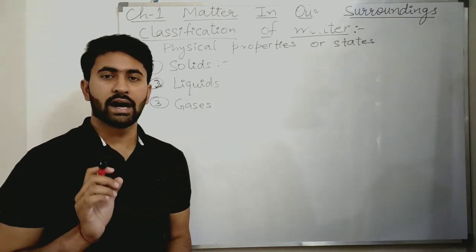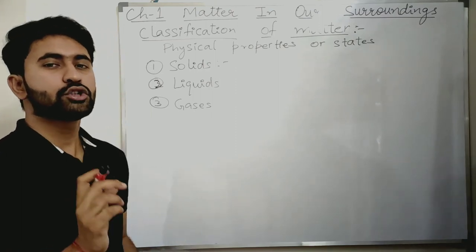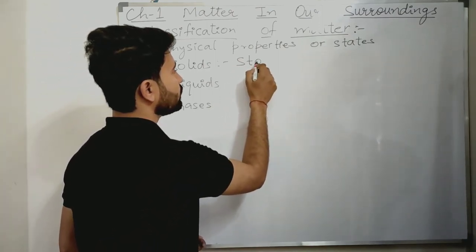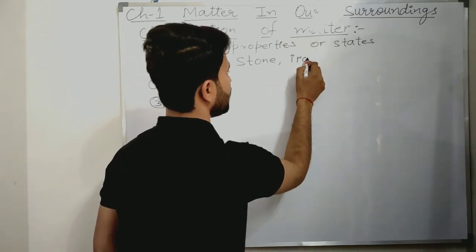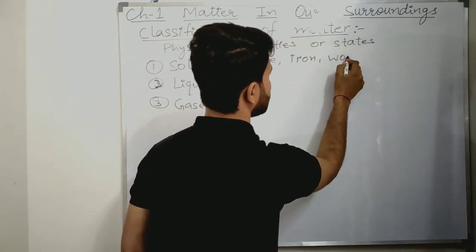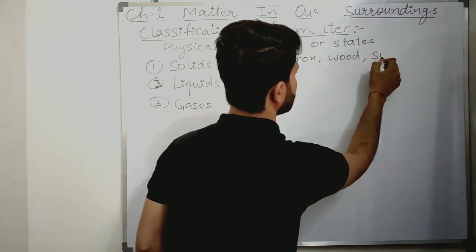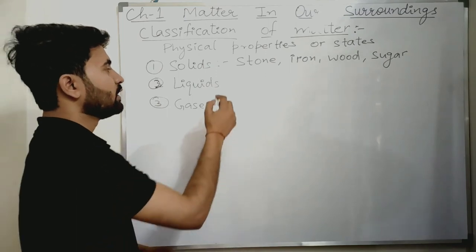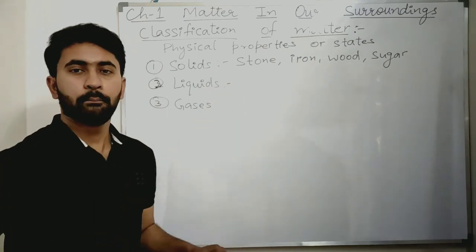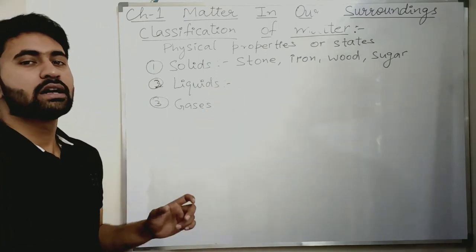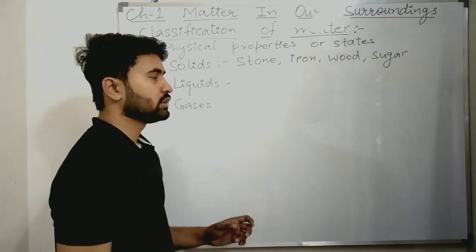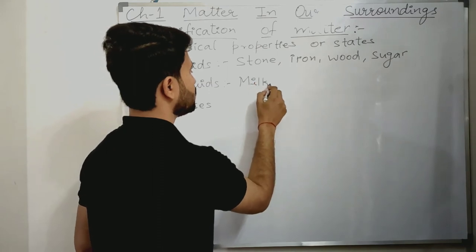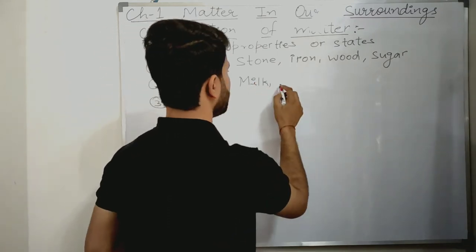Stone, iron, wood, and sugar — they are all solid forms of matter. Whereas milk, water, kerosene, and petrol are the liquid forms of matter.